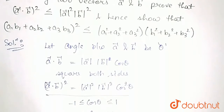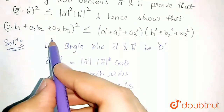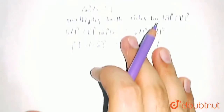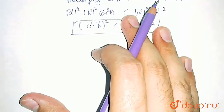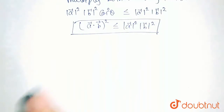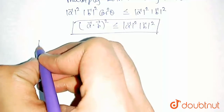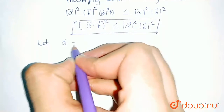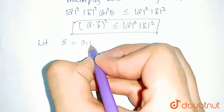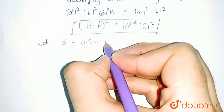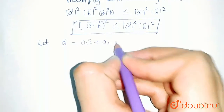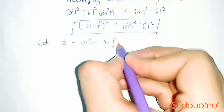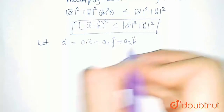Now, we need to prove the second condition. In order to prove this part, we will use this condition and let us assume A vector is equal to A1 i-cap plus A2 j-cap plus A3 k-cap.